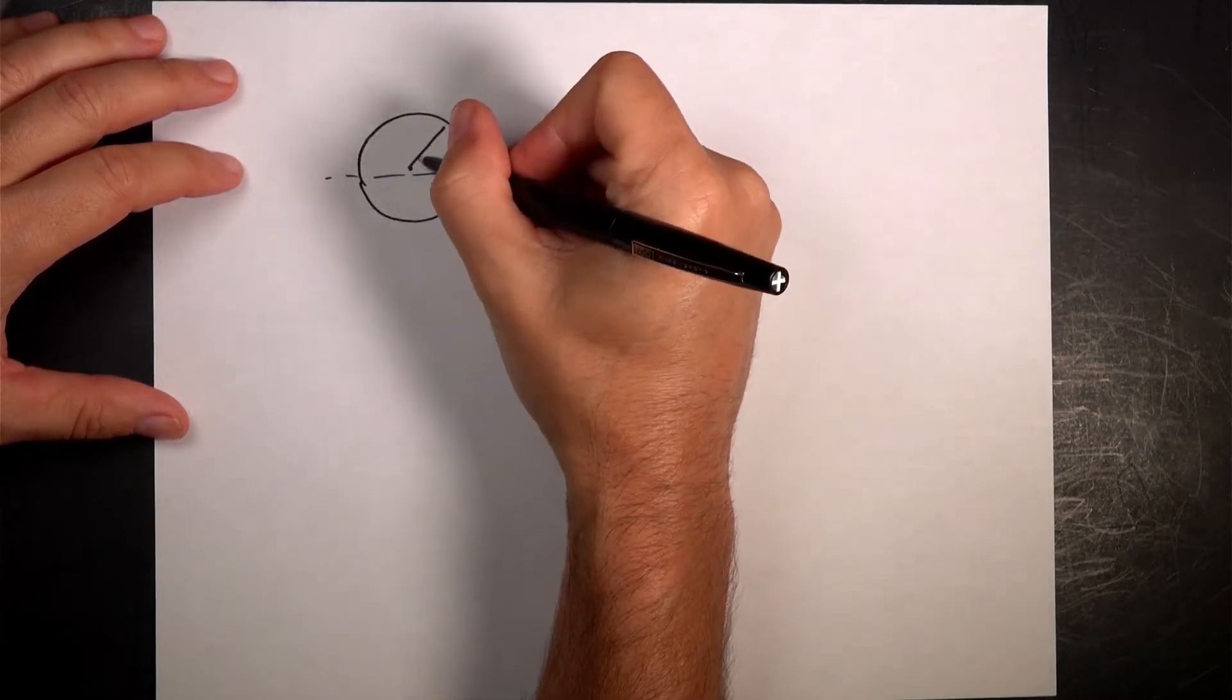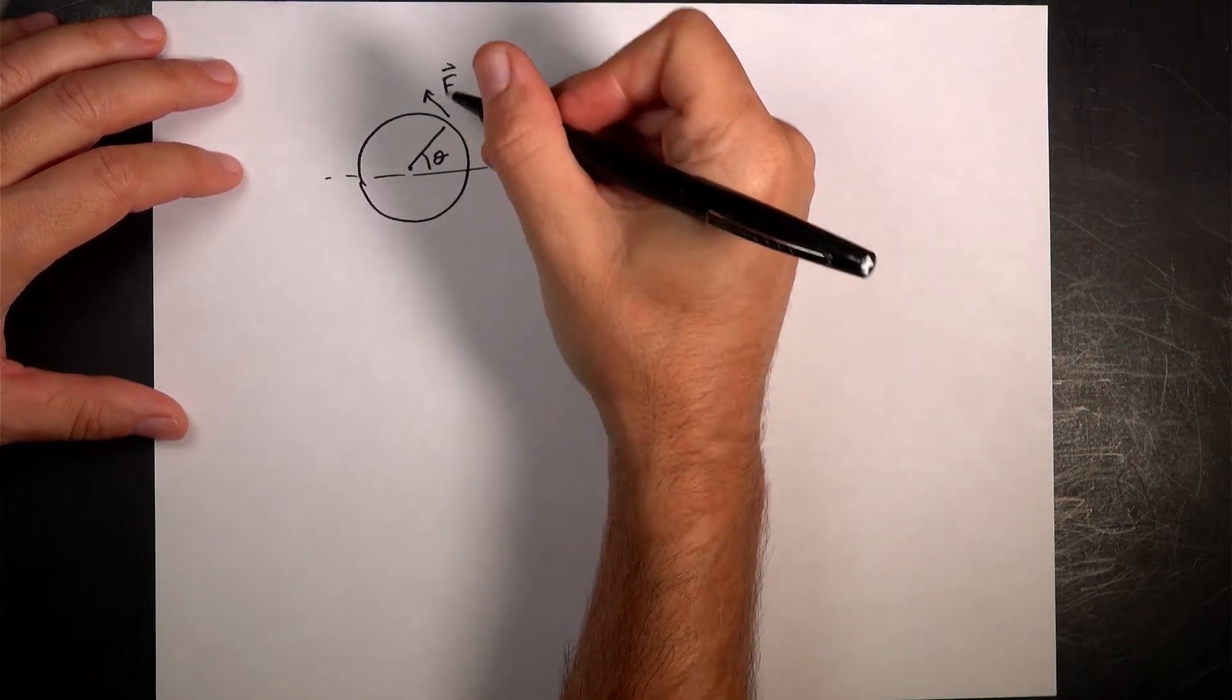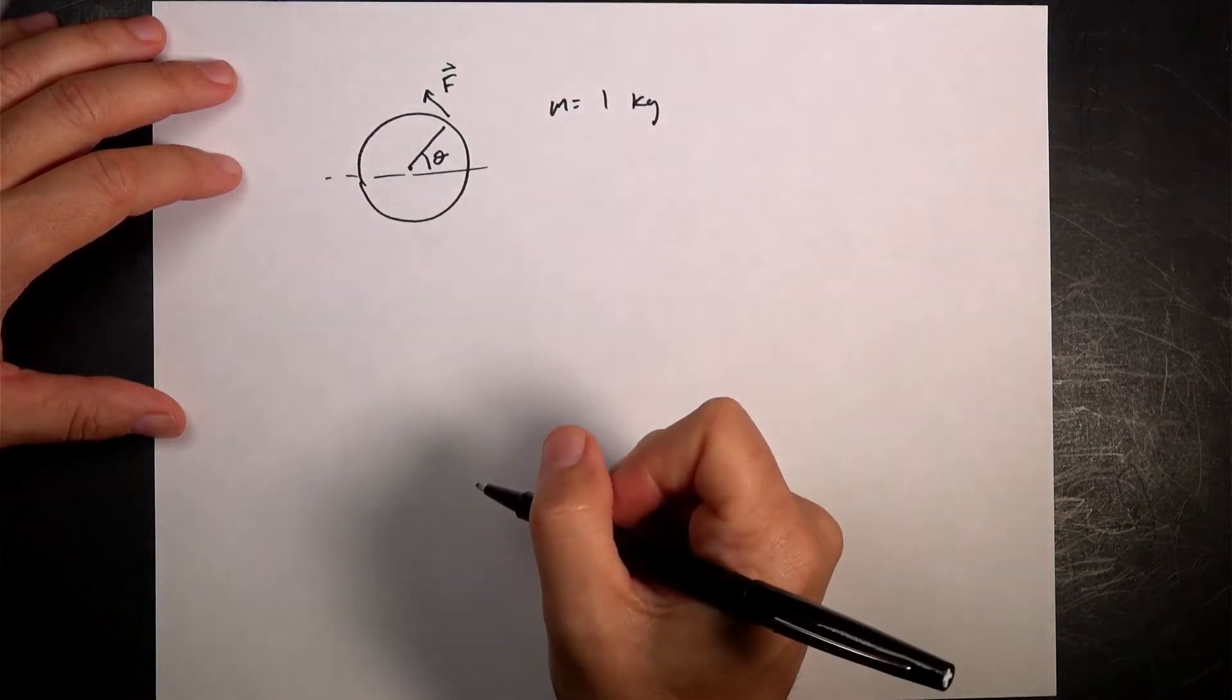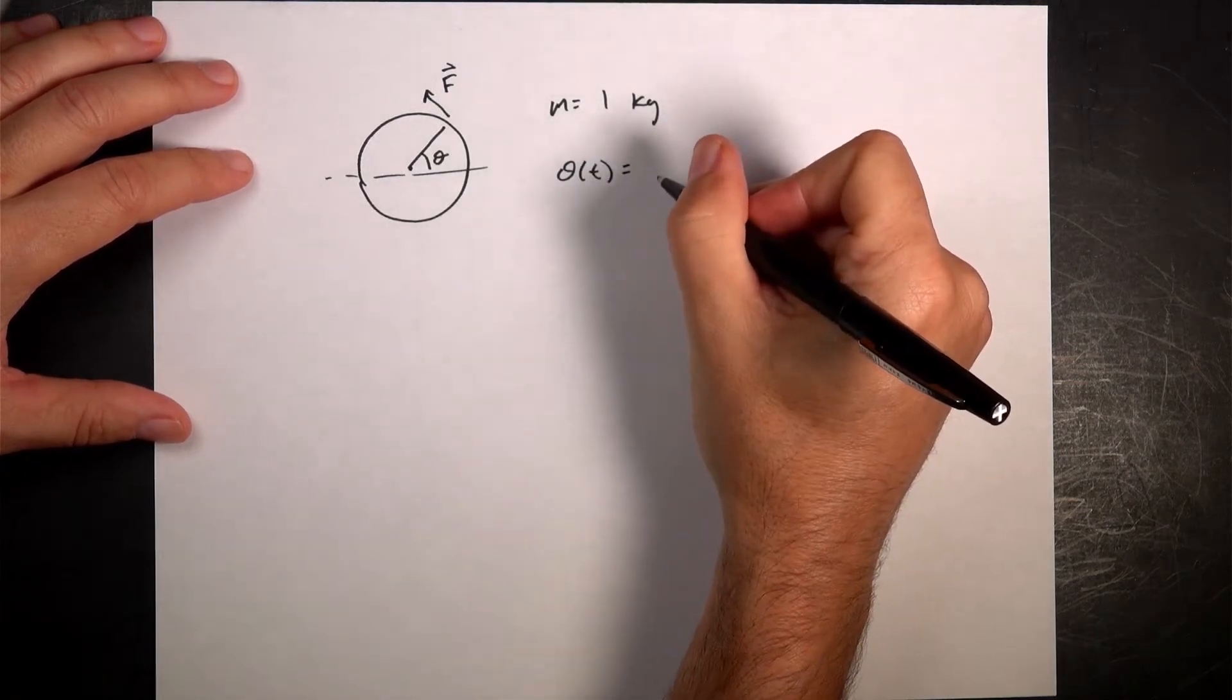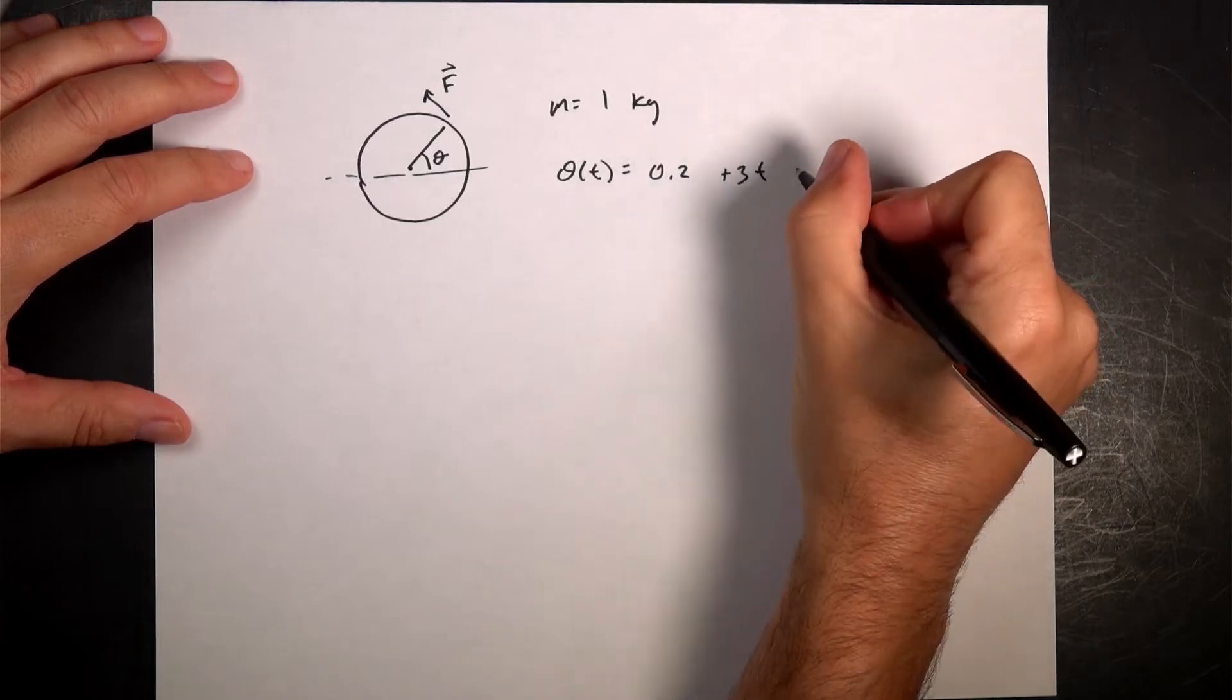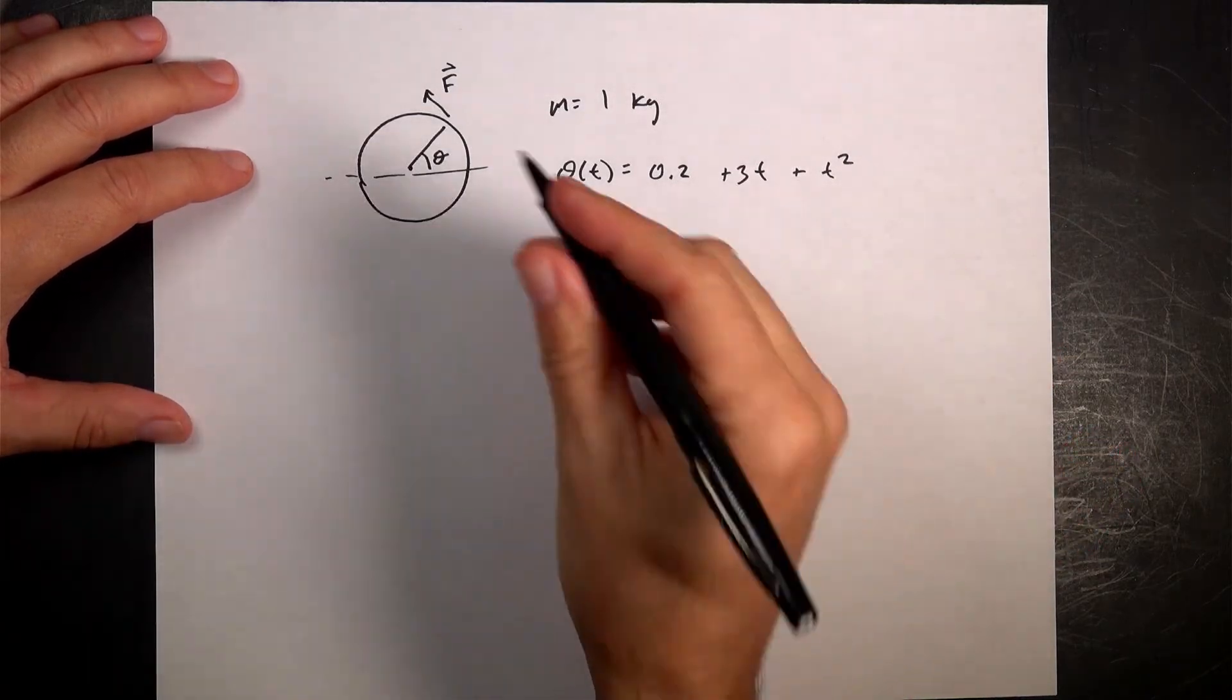I know I have this angle theta. I have this force F. I know the mass is one kilogram. And then I know theta as a function of time is equal to 0.2 plus 3t plus t squared. And I want to find the radius.